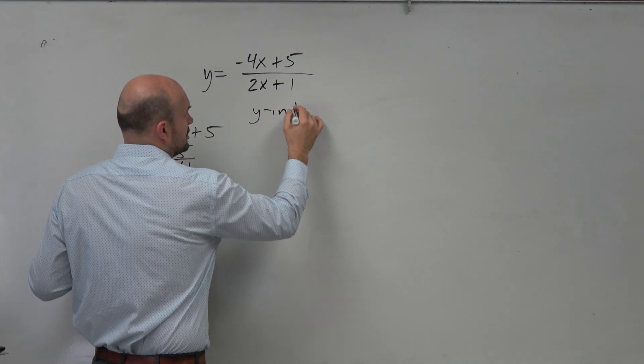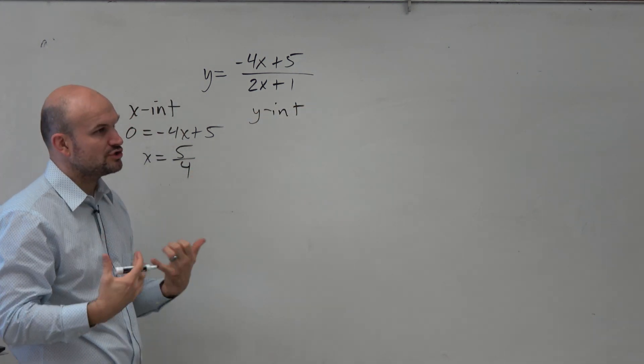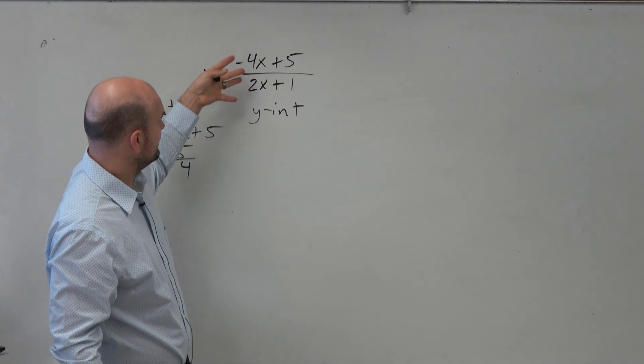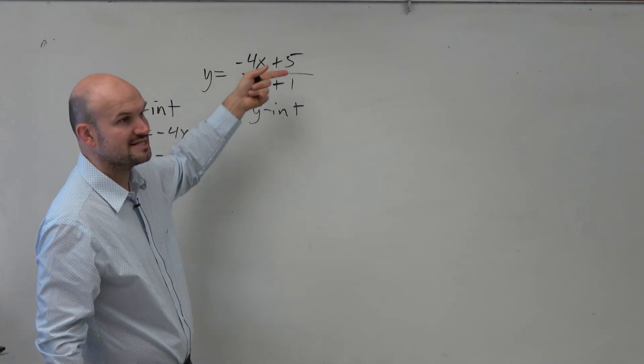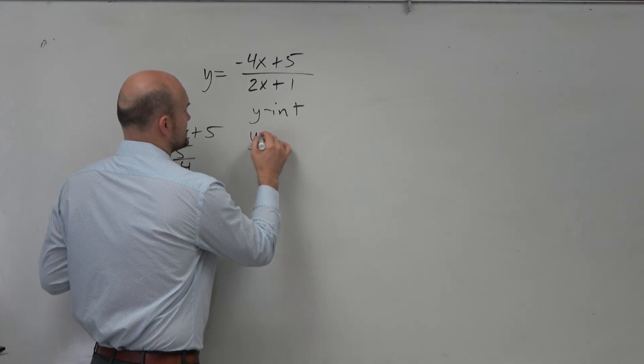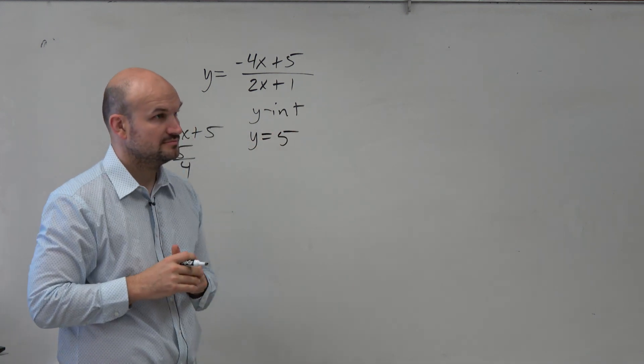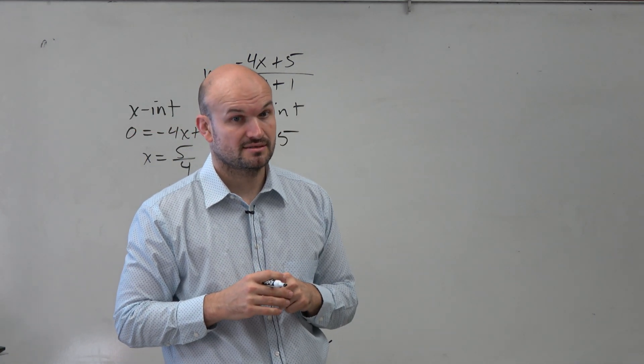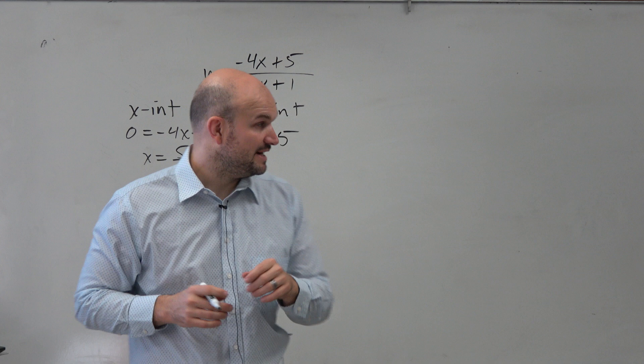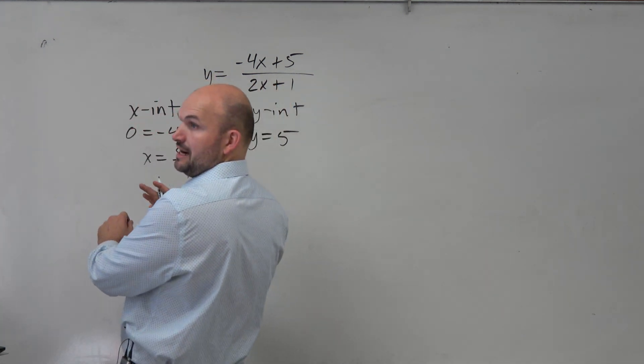For the y-intercept, we already did it the long way, so let's do it the short way. If we plug 0 in for x, we have constant over constant, which looks like y equals 5. It would be negative 5. That's supposed to be a negative 1, which I didn't copy down correctly.